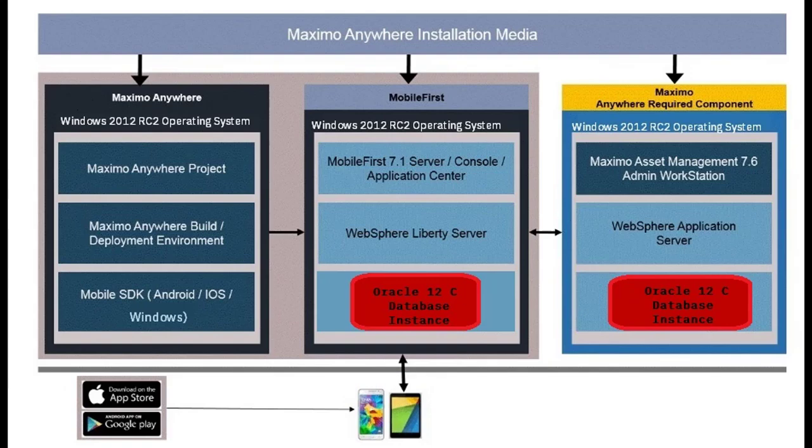The final video covers downloading a Maximo Anywhere app from Google Play and connecting it to the Maximo Anywhere environment. By the end of this course, you will know how to install Maximo Anywhere, how to configure authentication methods for the platform, and how to connect an Android mobile device to the Mobile First Server.